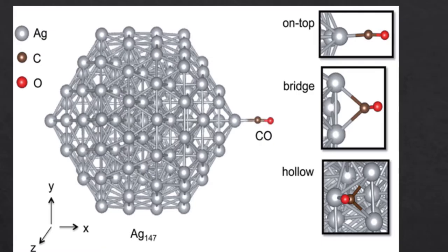What they have done is they have taken a system of silver — 147 atoms — and deposited onto it a carbon monoxide molecule. They've done this in three different configurations, and these configurations are being tested to see which one is most likely to have a hot carrier transferred to it from the silver under laser excitation.